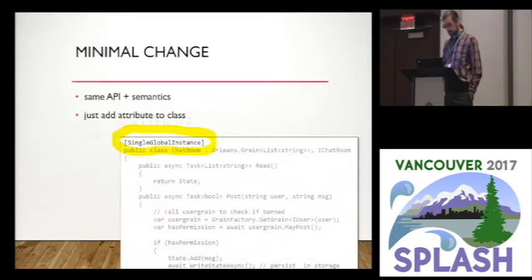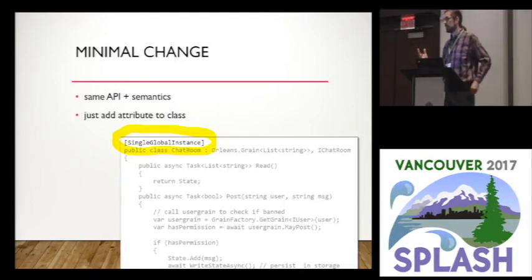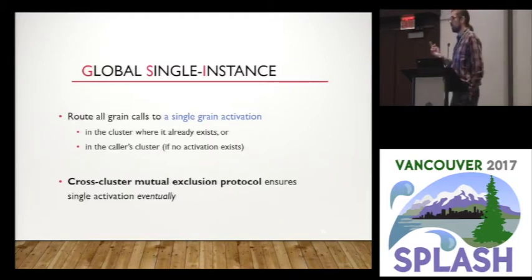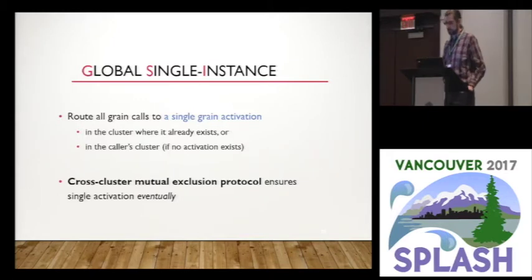The first solution is simple: we let you add an annotation on a grain that says this grain could live anywhere in the world. When you send a message to this grain, it checks globally if anybody has an activation. If nobody has one, it creates it locally and routes all calls to that activation. There is a protocol — one of the distributed protocols we implemented — to make sure you don't have two activations, handling race conditions and things like that.